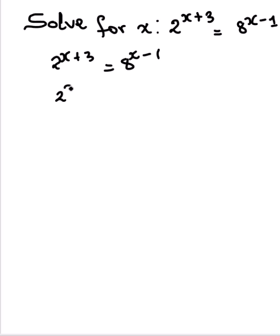So write 2 to the power x plus 3 is equal to 2 cubed to the power x minus 1, because 8 is 2 to the power 3. This is the same as 2 to the power 3 times x minus 1.